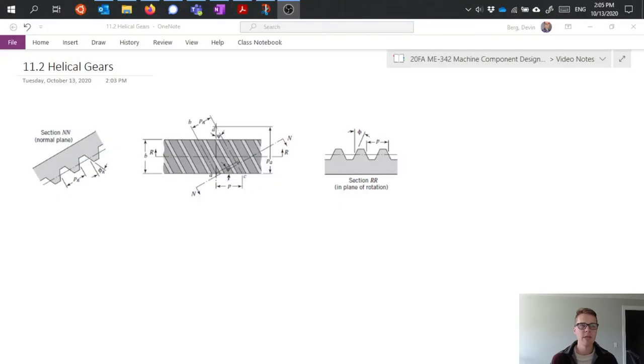Hi everyone. In this video I want to talk about helical gears. Helical gears are very similar to spur gears, the main difference being that we now have a helix angle to consider. This helix angle represents how skewed from a perpendicular axis the gear teeth are.